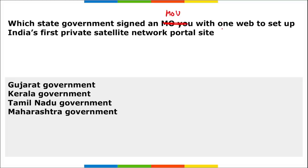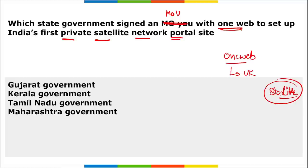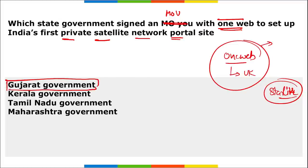Next question: which state government signed an MOU — Memorandum of Understanding — with OneWeb to set up India's first private satellite network portal? OneWeb is a UK-based satellite communication company that has launched multiple satellites into space. It is similar to Elon Musk's Starlink and aims to provide internet connection in remote areas with the help of those satellites. The answer is the Gujarat government.